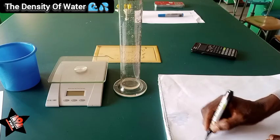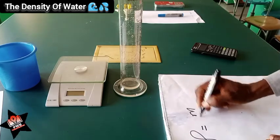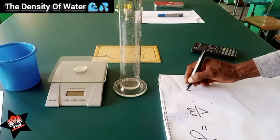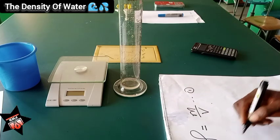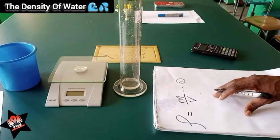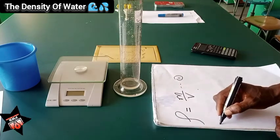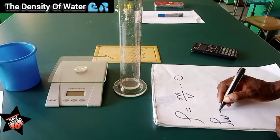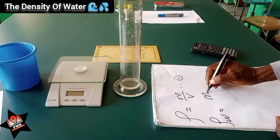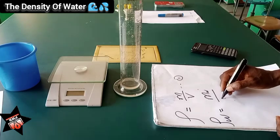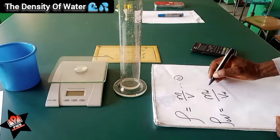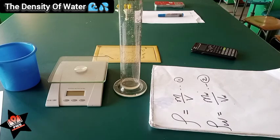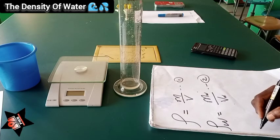The equation for the experiment: density is given as rho equals mass over volume — call this equation number one. We are going to customize this equation since we are finding the density of water, so we write rho_w equals mass of water over volume of water — call this equation number two. It is equation number two that we are going to use.